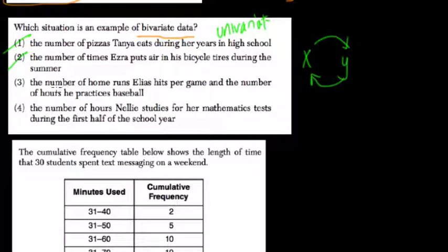The number of home runs hits per game and the number of hours he practices, that's your bivariate. Because you're connecting the number of hours you practice with the home runs. How does practice affect your ability? That's bivariate.